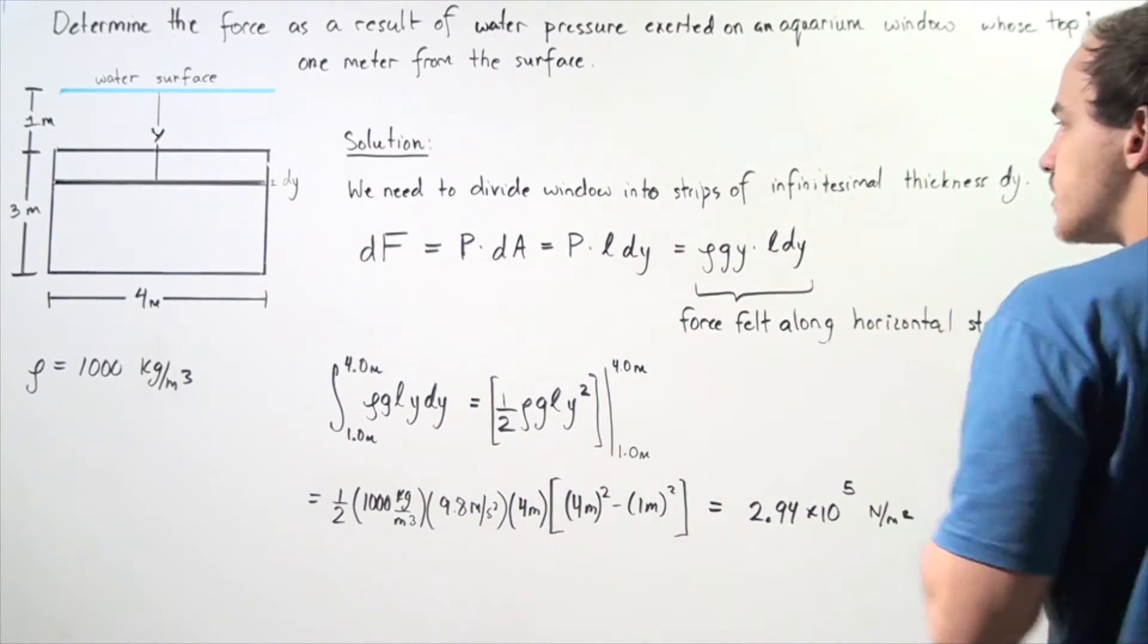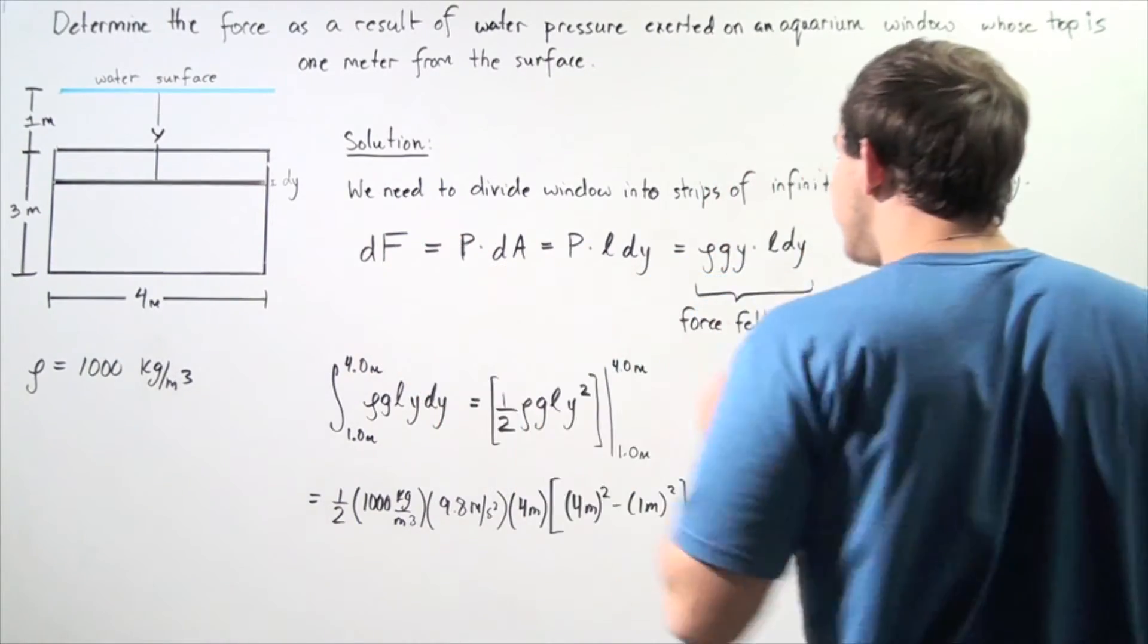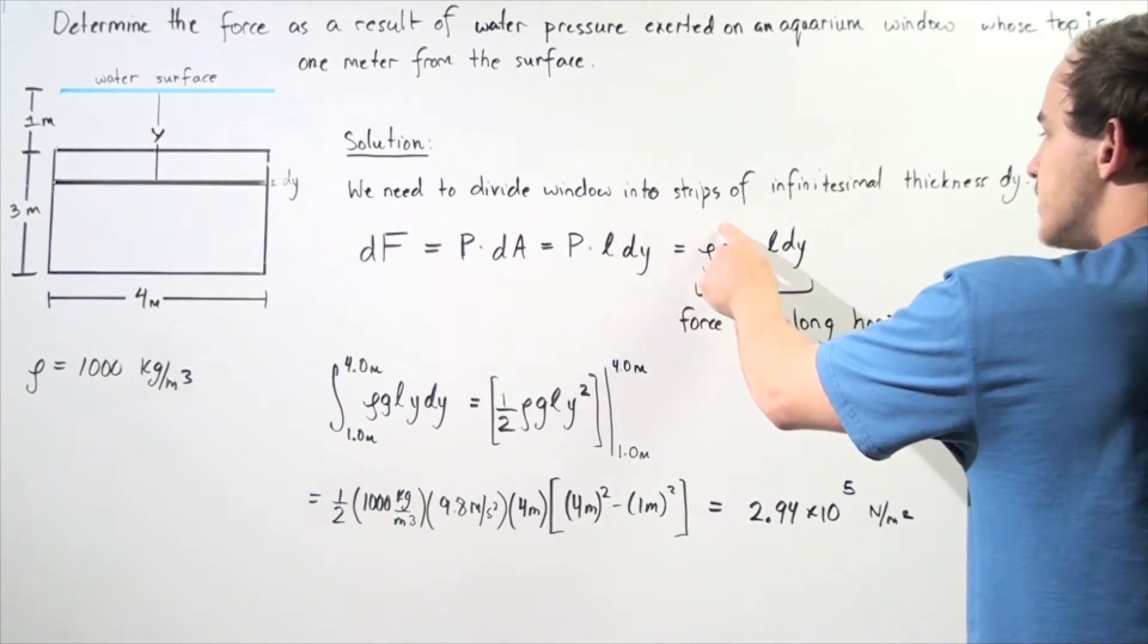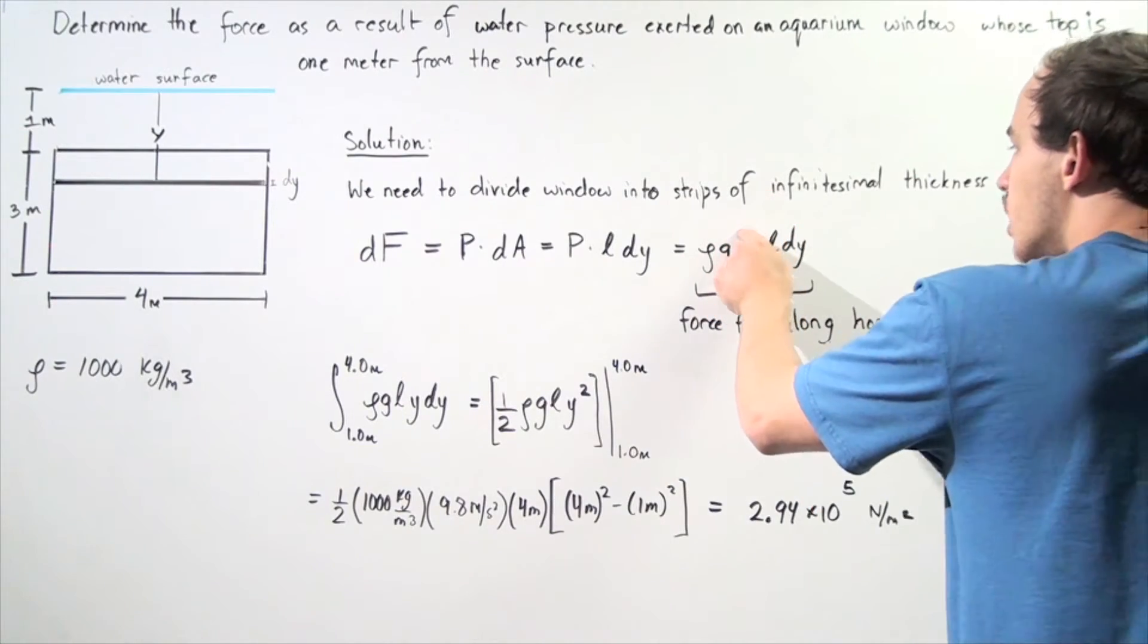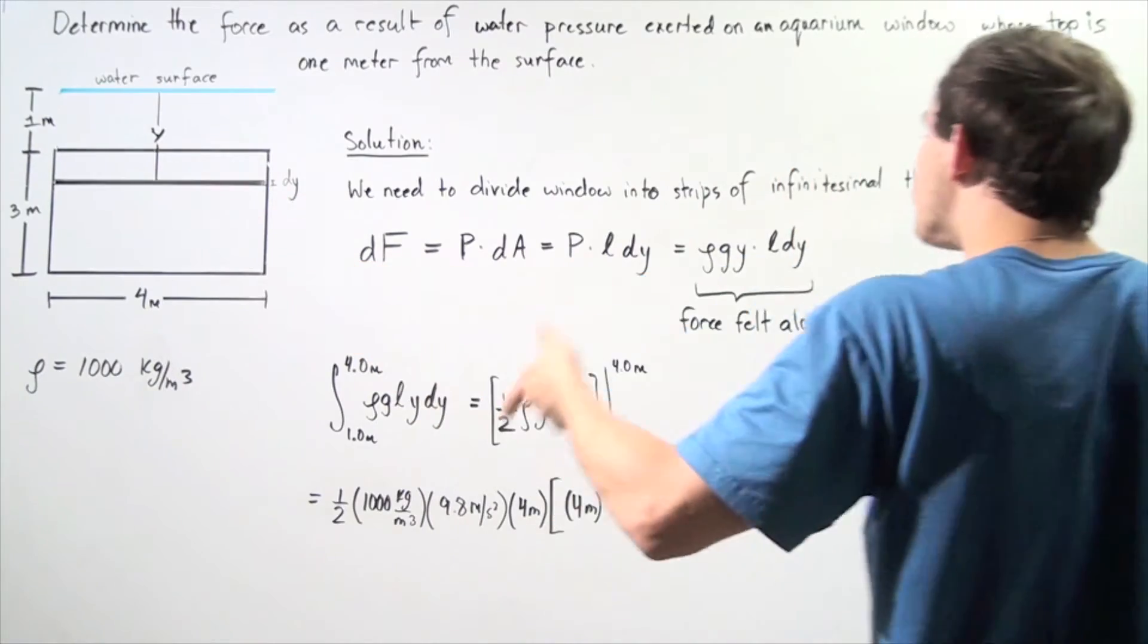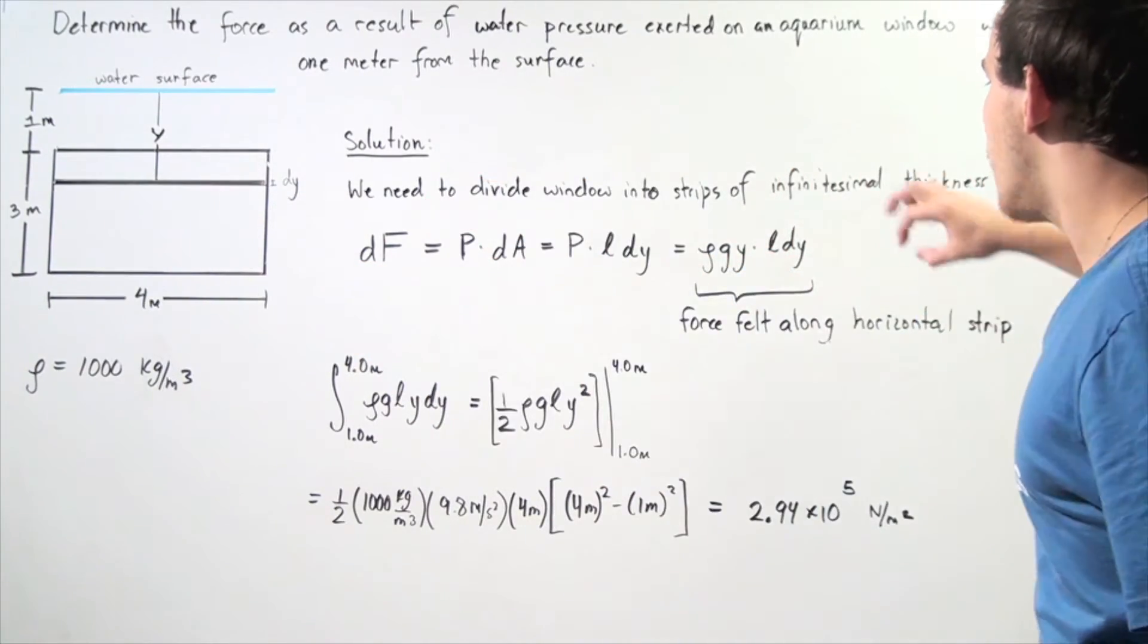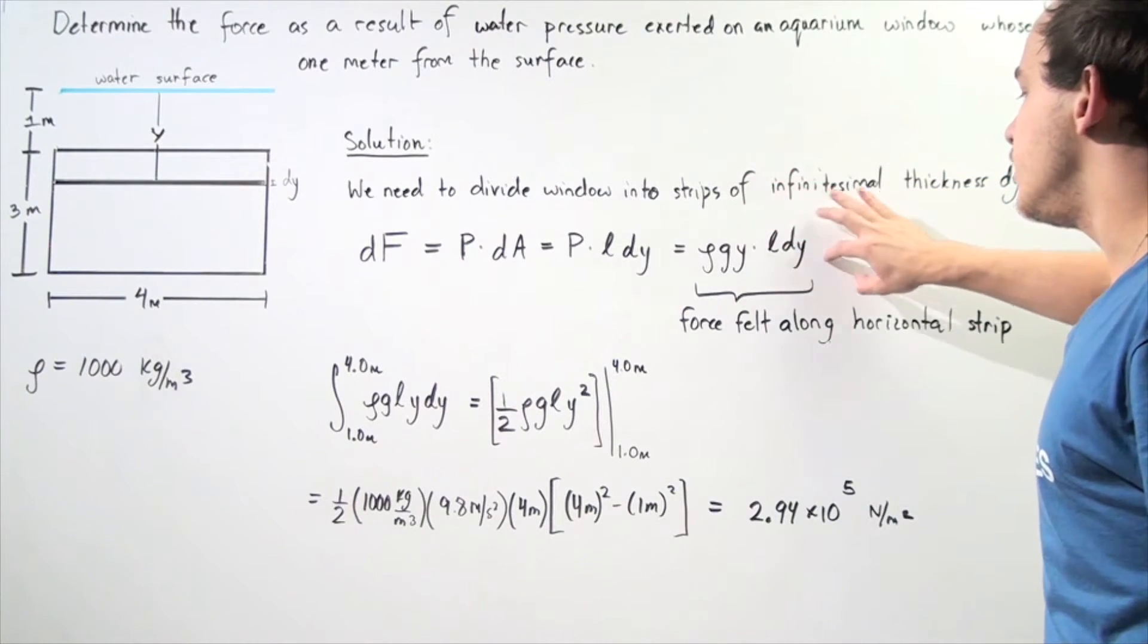So now we have the following result. The infinitely small force is equal to our density times the gravitational constant g times the distance y from the surface of the water to where the strip is, multiplied by L, our length of the strip, multiplied by our infinitely small thickness dy.